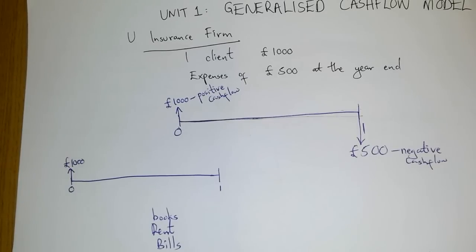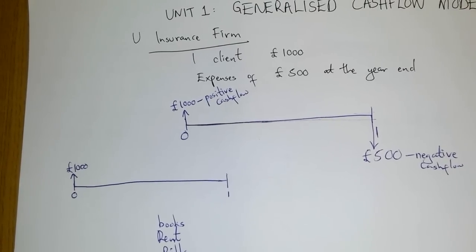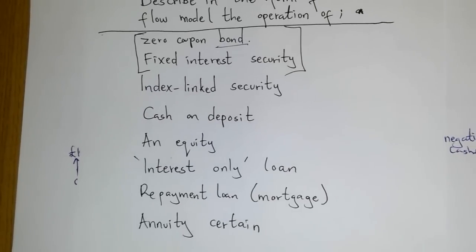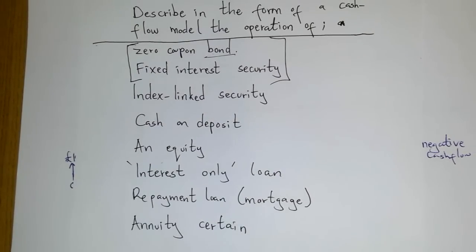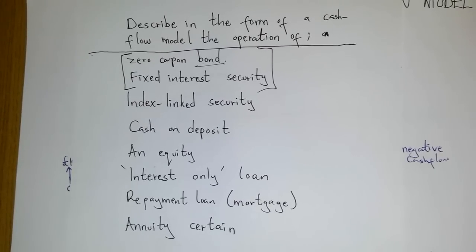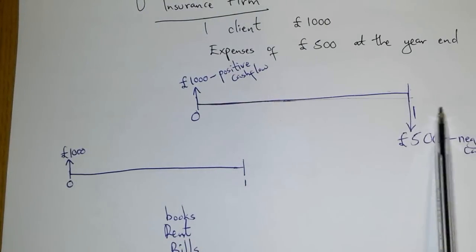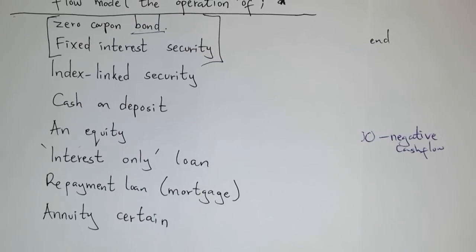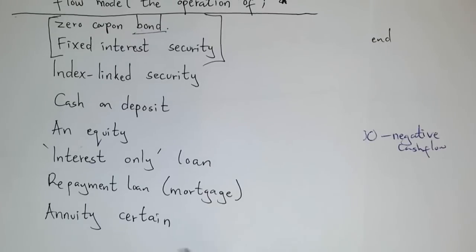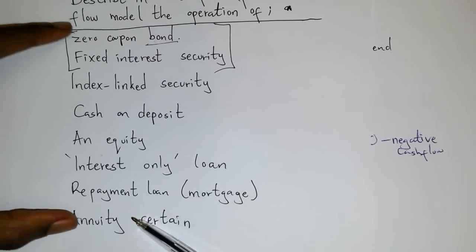That being said, I'd like to give you a general overview of what the syllabus requires us to cover for the rest of the unit. We are going to describe a zero coupon bond, a fixed interest security, an index linked security, cash on deposit, equity, an interest only loan, a repayment loan, and an annuity certain — all using a cash flow model, meaning we will use cash flow diagrams like this to describe each and every one of them. You may take a look at the second part of Unit One to see how these have been described.